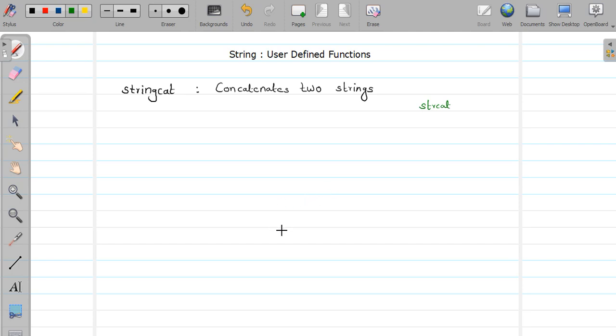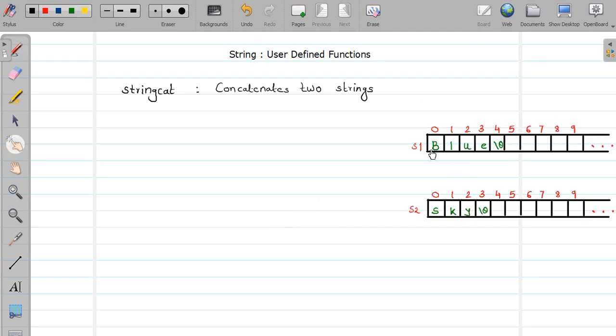Let us consider two strings: s1 and s2. s1 is having content 'blue' and s2 is having content 'sky'. What I want to do is concatenate these two strings. We will write a logic for appending the content of s2 to s1, so s1 will have the content 'blue sky'. Definitely I have to pass two arguments, both of type string, which is a character array.